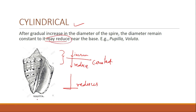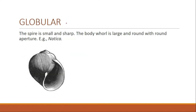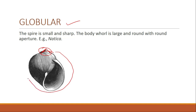The next form is globular. Here the spire is very small and sharp, while the body whorl is large and round with a round aperture. So in globular form: the spire is small and sharp, and the body whorl is large and round with a round aperture. The example is Natica.